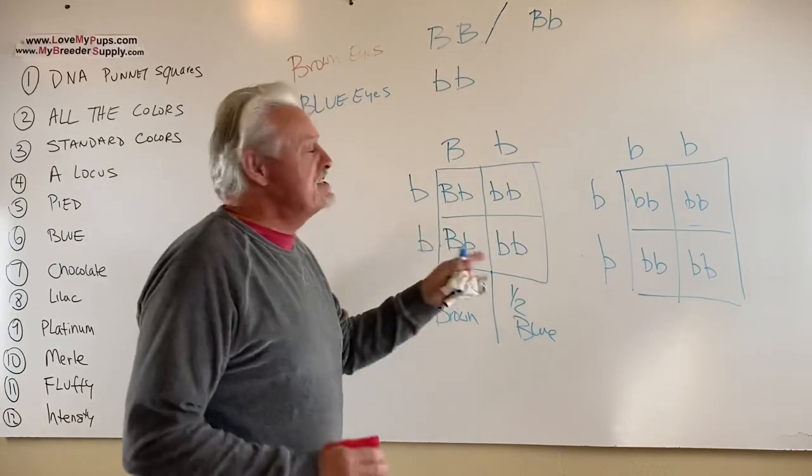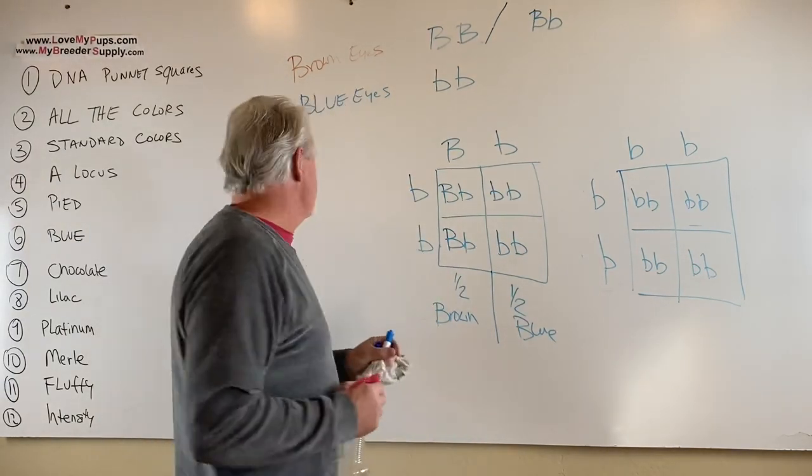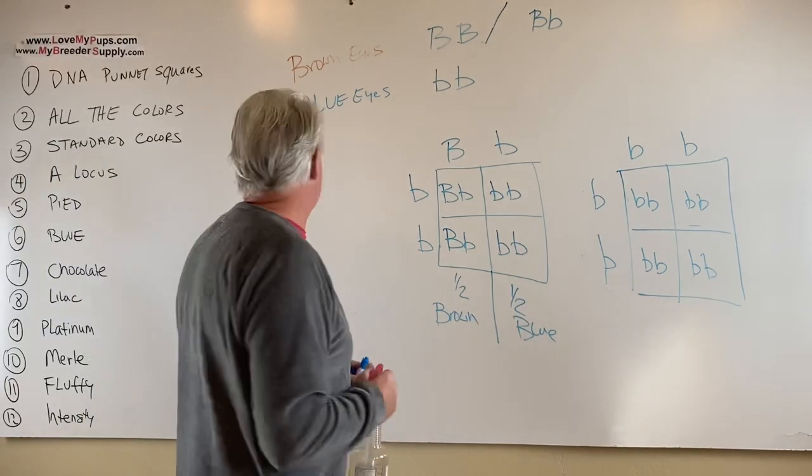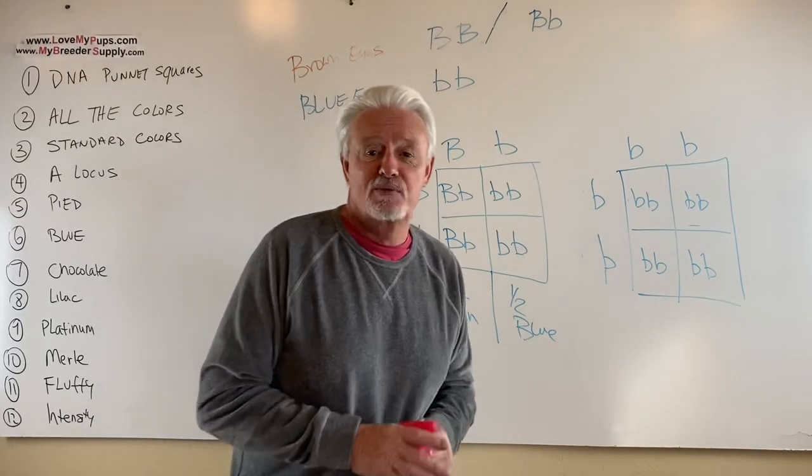But, so Punnett square, very easy way of deciding what's going on when you want to look at these particular traits. So I think that that is really all that we're going to be talking about in this particular video. Next video, we're going to talk about all the colors that are available. So thanks for watching. Bye.